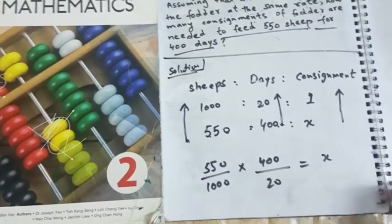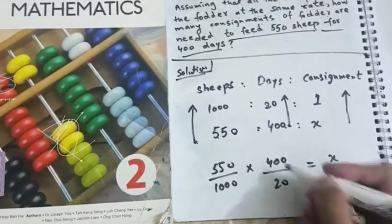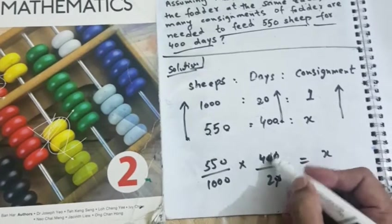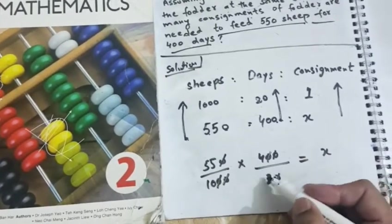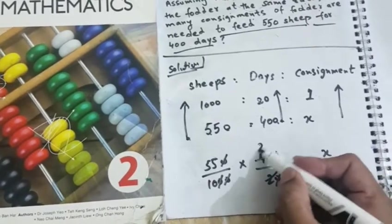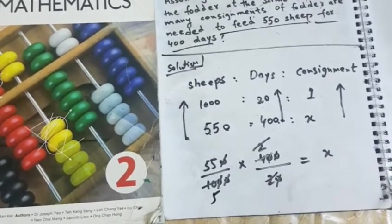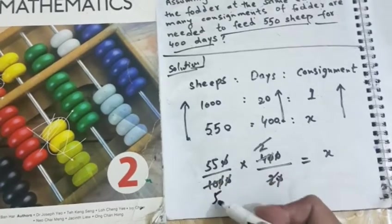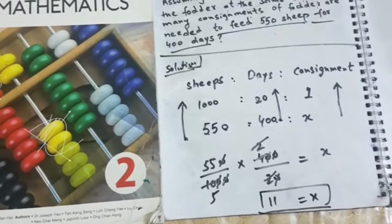Now, I think you can solve the later part of the question. So, x will be the number of consignment. 1, 0 cut with this 0. And, this 1, 0 cut with this 0. And, this 1, 0 cut with this 0. 2, 2 times will be 4. And, 2, 5 times will be 10. And, 55 divided by 5 will be 11. So, 11 is actually the number of consignment.